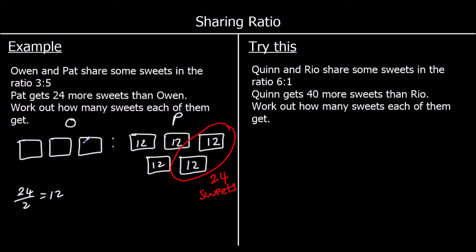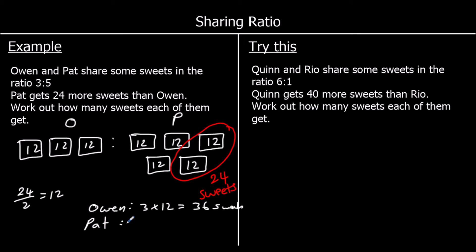So we can work out how much each of them have, because each box has got the same amount in. Owen has three 12s, which is 36. And Pat has five 12s, which is 60 sweets.